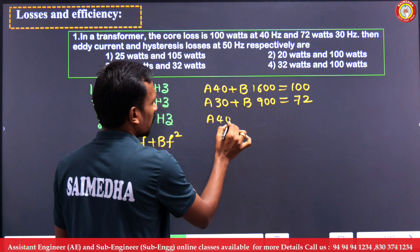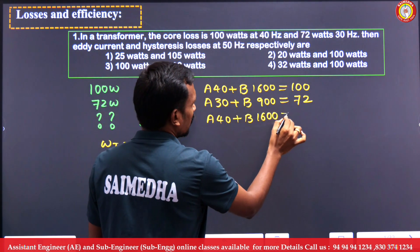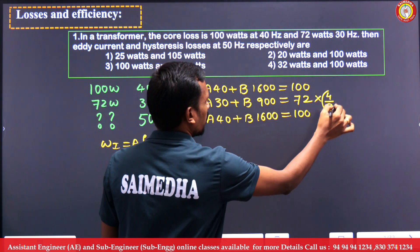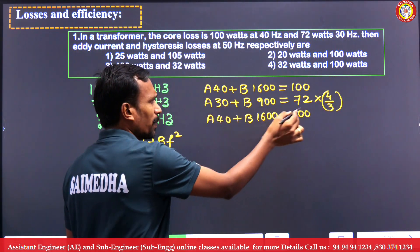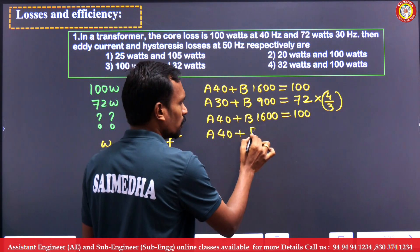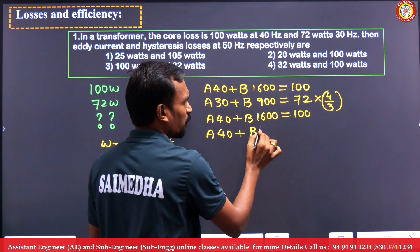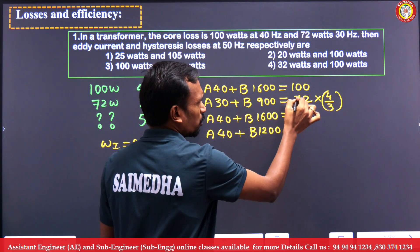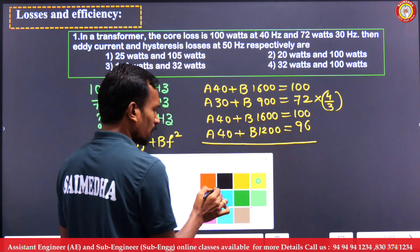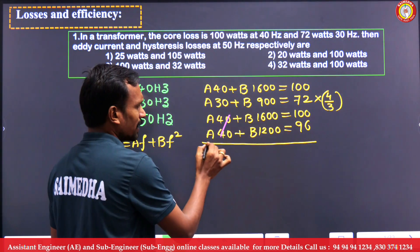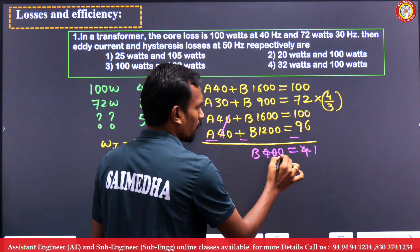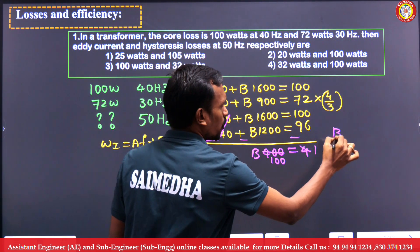Now we solve these two equations. Take the first equation: a×40 + b×1600 = 100. Multiply each term by 4/3 to align the 'a' terms. This gives us a×40 + b×900×(4/3) = 72×(4/3), i.e., b×1200 term. Subtracting, the 'a' terms cancel and we get b×400 = 4, so b = 1/100.